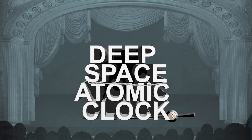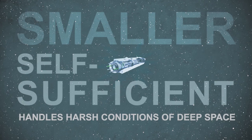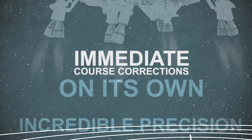Scientists and engineers have now developed a way for the spacecraft to have its own onboard clock, so it no longer has to check in with Earth for its coordinates. This breakthrough device is smaller, self-sufficient and can handle the harsh conditions of deep space. Now the spacecraft can make immediate course corrections on its own, and land with incredible precision.